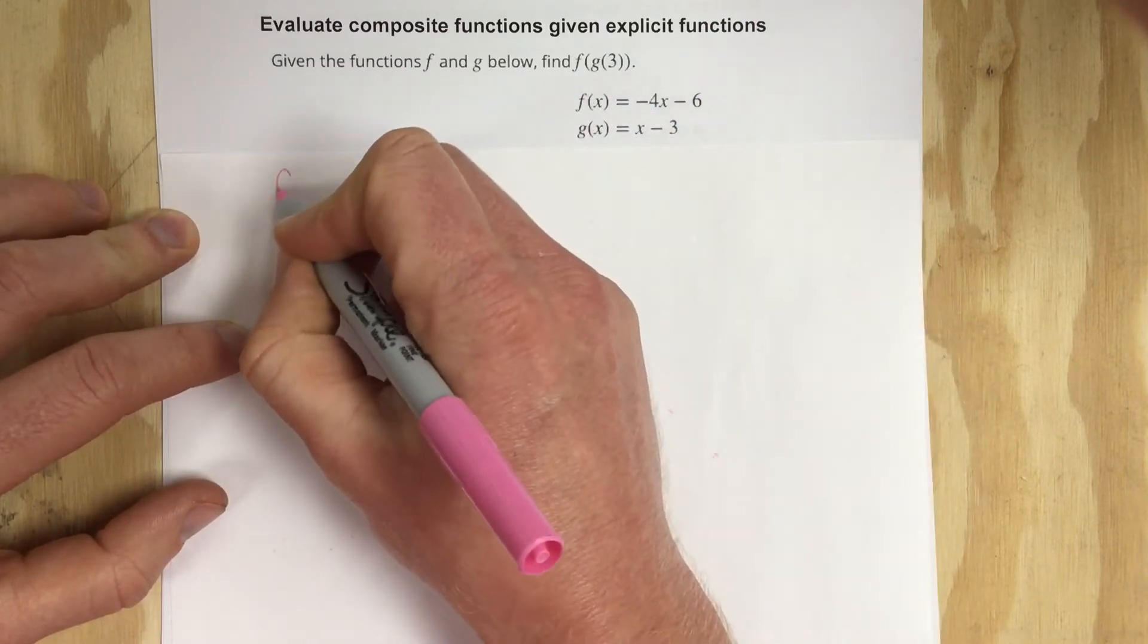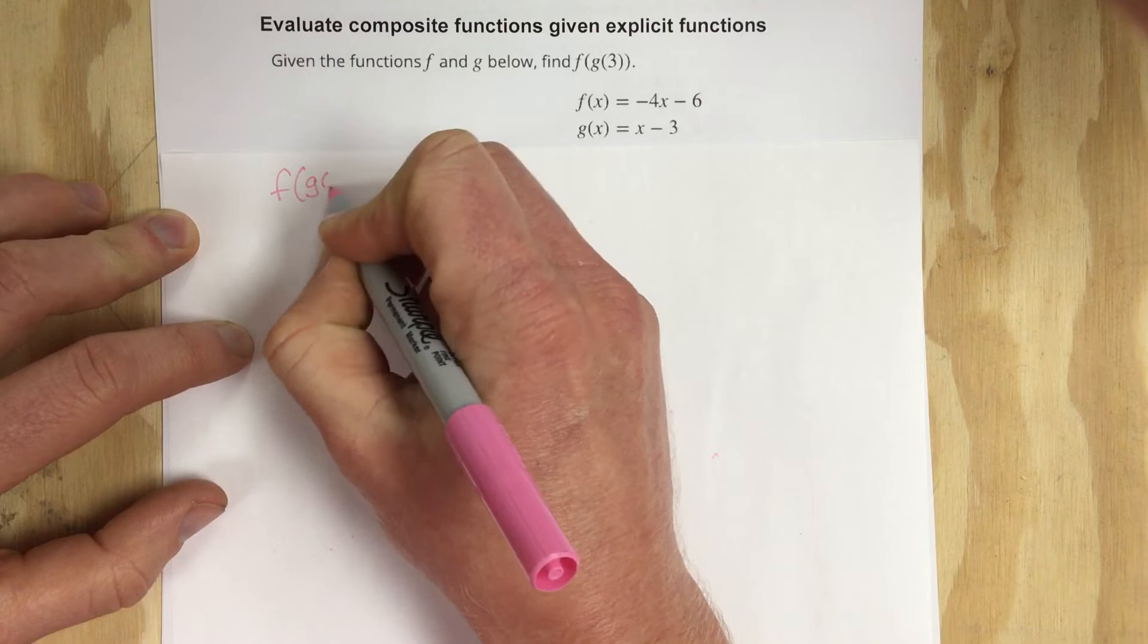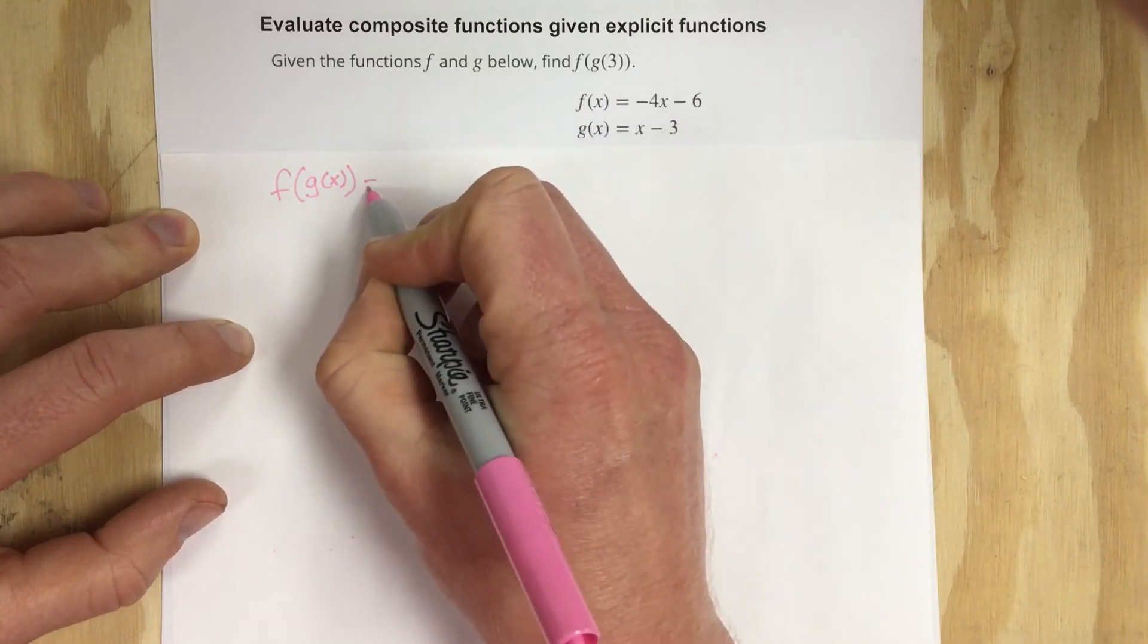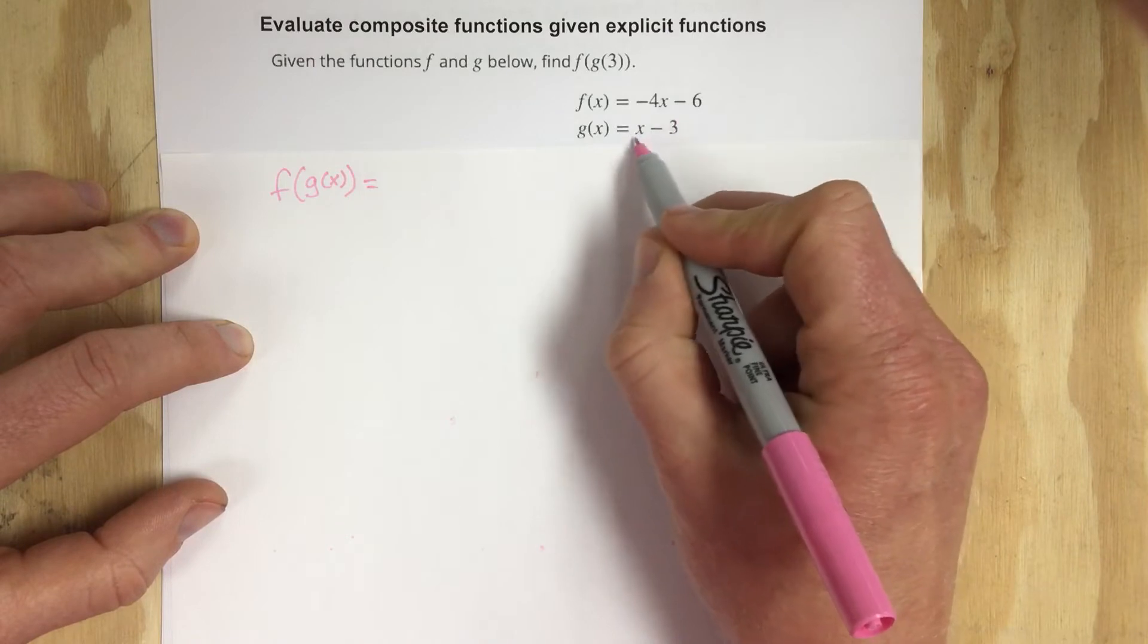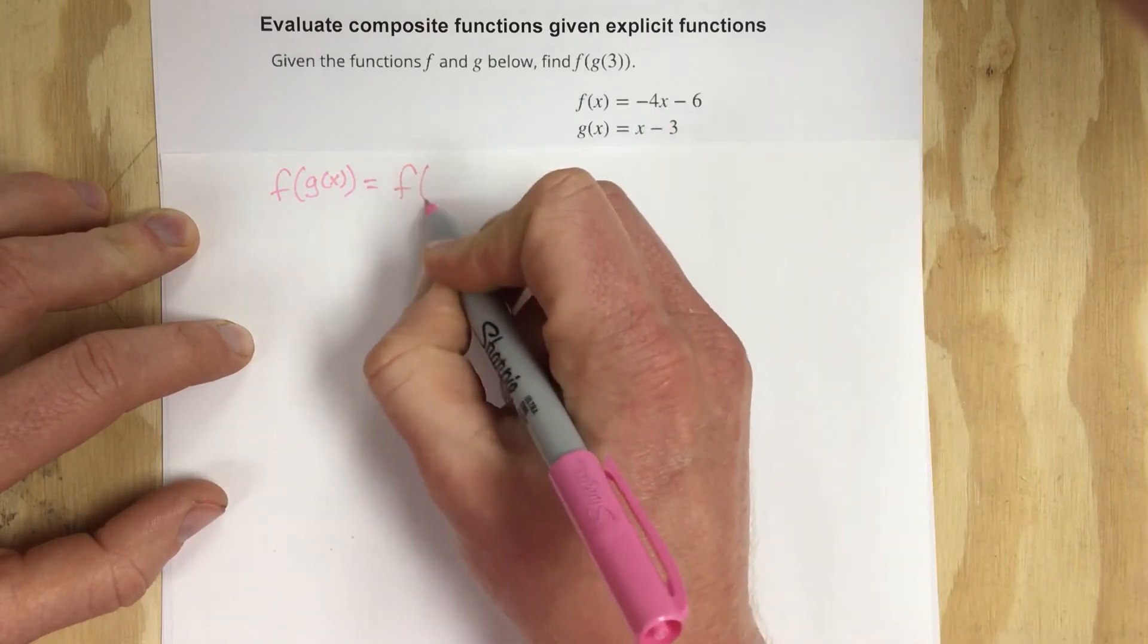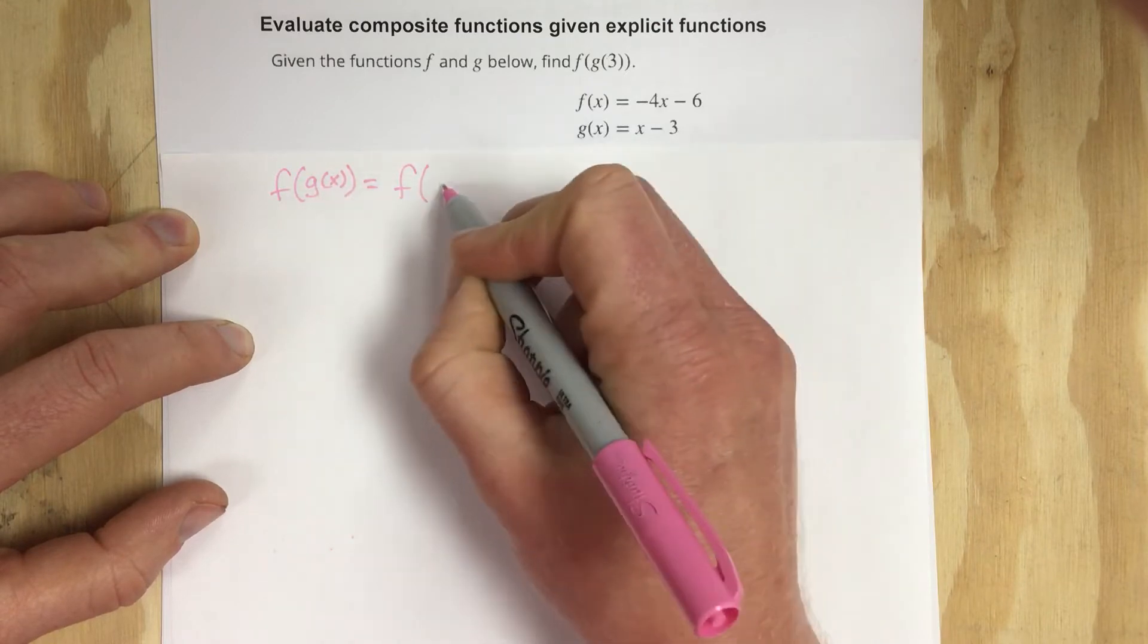So I'll start by saying f of g of x instead of f of g of 3, and then I'll start plugging in the g function into the f function. So I've got f, I replace g(x), I've got x - 3.